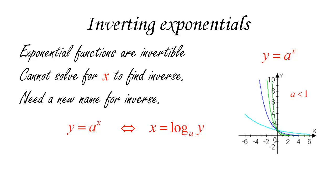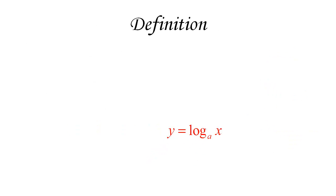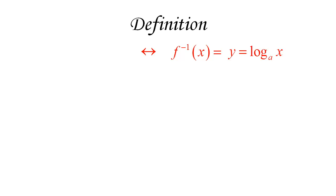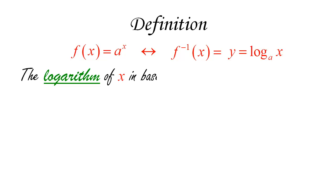We switch x and y, and that gives us the actual inverse function. So the function y equals log base a of x is the inverse of the exponential function a to the x. For each exponential function we have a different corresponding logarithmic function, and in all cases a has to be a positive number.